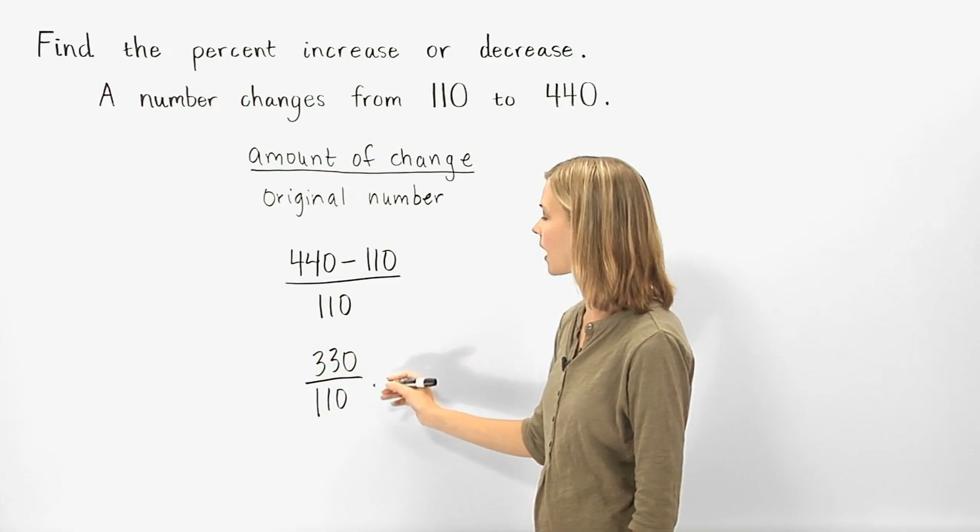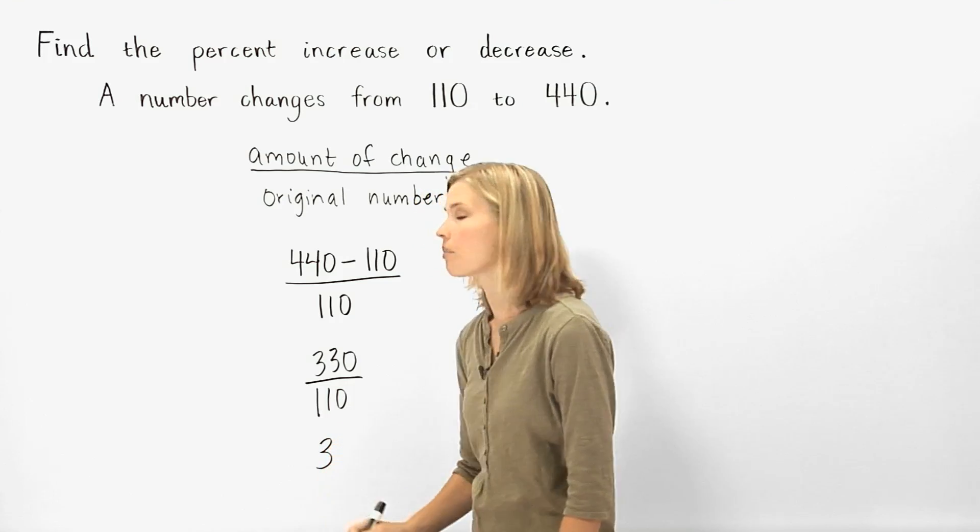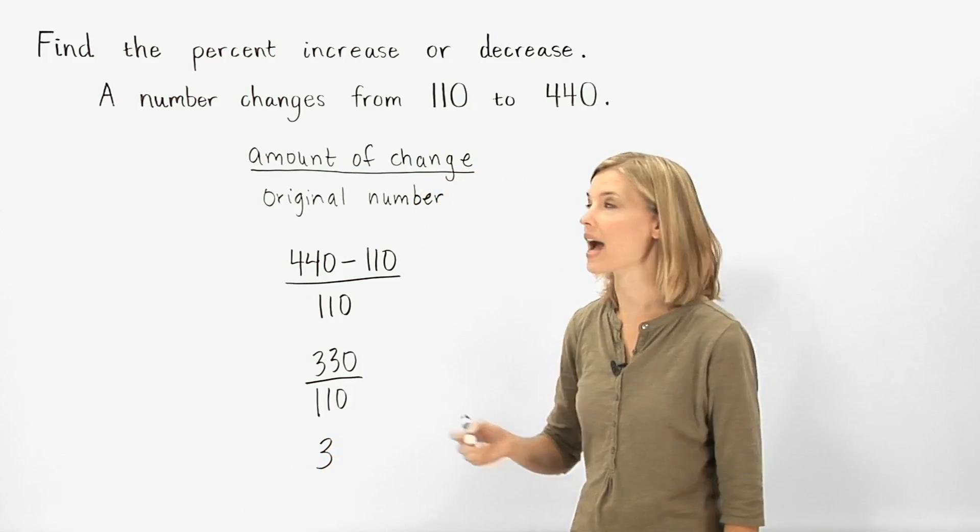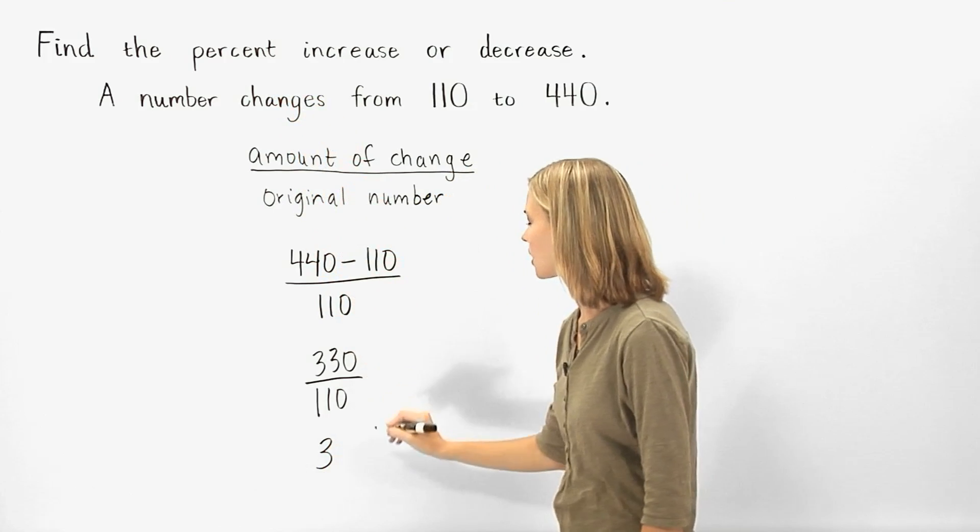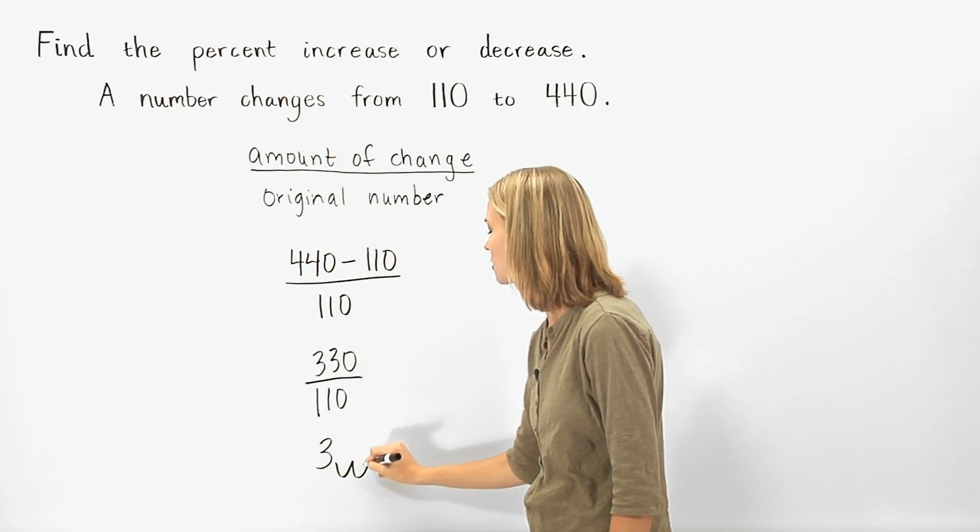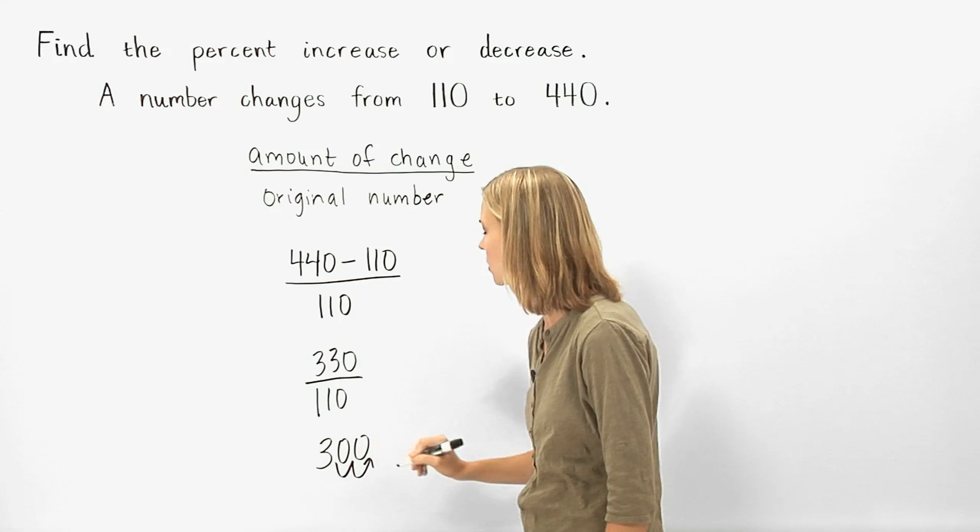330 divided by 110 is 3. But remember that we want to write our answer as a percent. So we move the decimal point two places to the right, and fill in the missing positions with zeros.